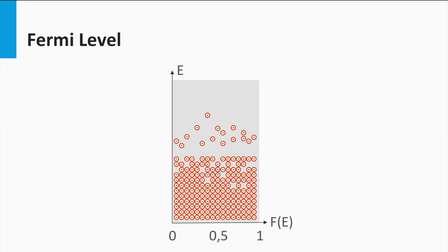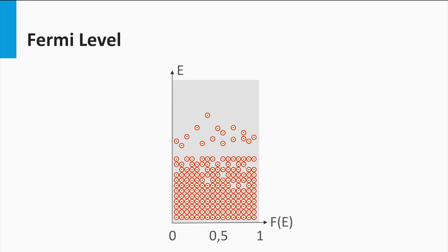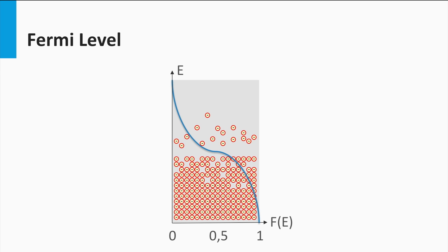Let's consider a metal. Electrons are filling the electronic band of a metal, which is a band of continuous energy levels. This band is not fully filled by electrons. The probability to find an electron is not the same at all energy levels: at low energy levels you will have a probability of 100% that electrons fill that level, while at high levels this probability is close to zero. This probability can be expressed by the Fermi-Dirac distribution function, which reflects the probability that an electron will occupy a state at an energy E.